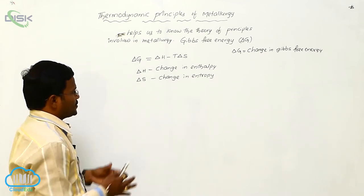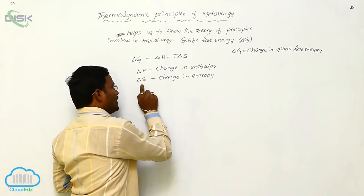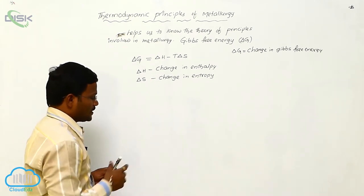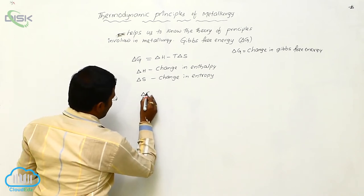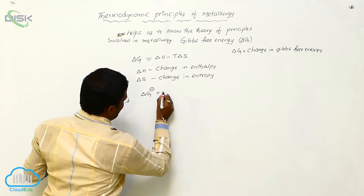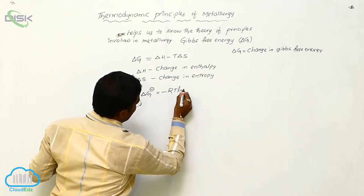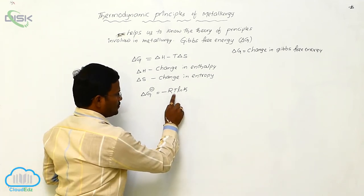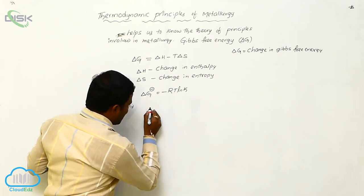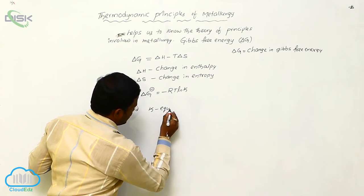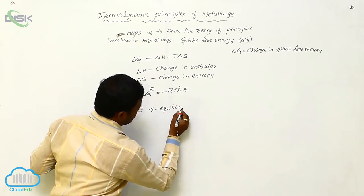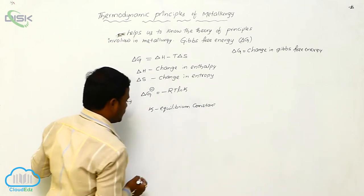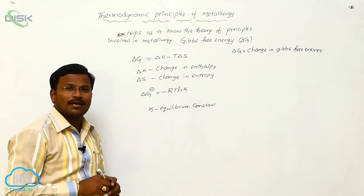By changing temperature — and thus changing entropy and enthalpy — there is a change in Gibbs free energy. Also, negative Gibbs free energy, Delta G minus, can be written as minus RT ln K, where R is the gas constant, T is temperature, and K is the equilibrium constant.